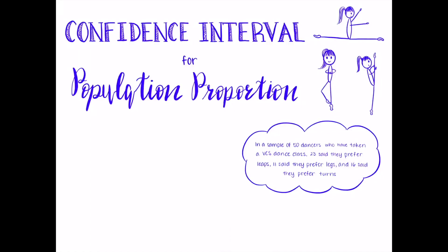This question asks us to construct the 95% confidence interval for the proportion of VCS dancers who prefer doing leaps over turns and legs.